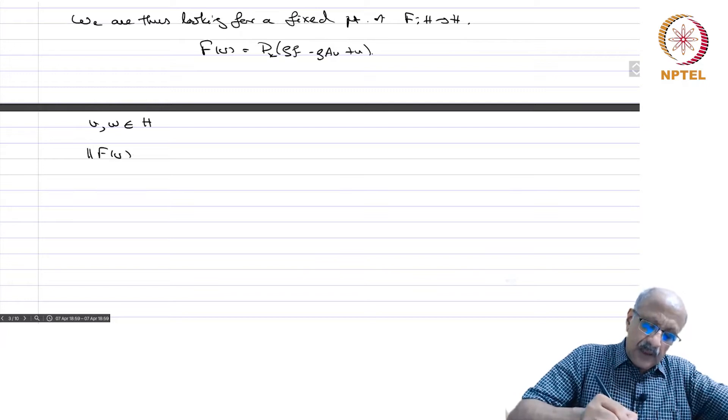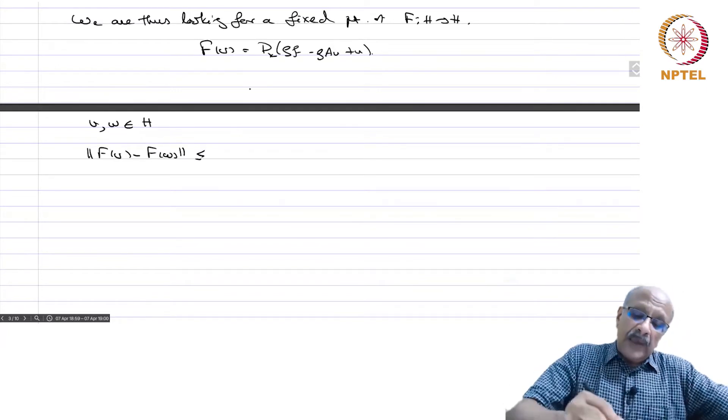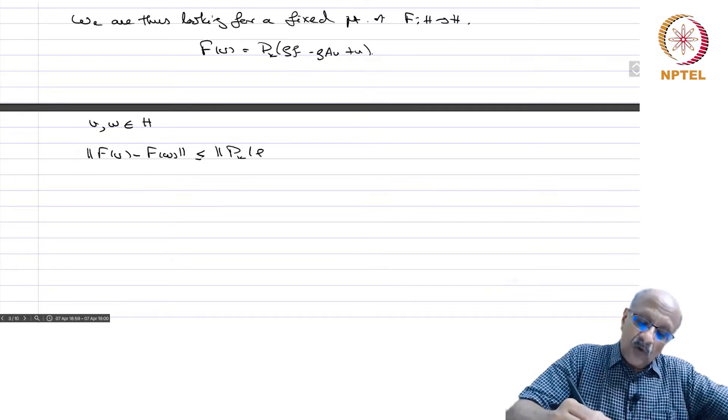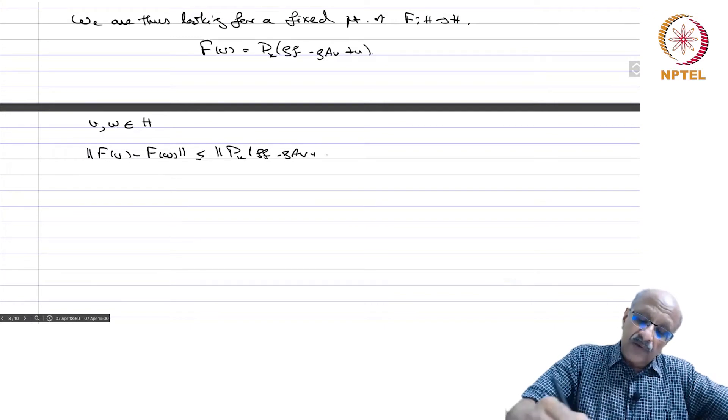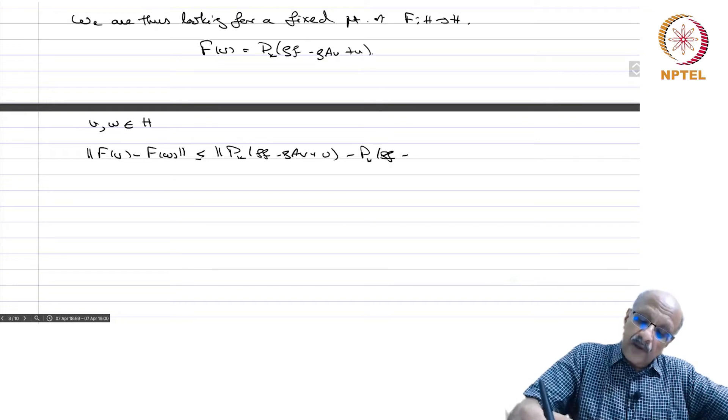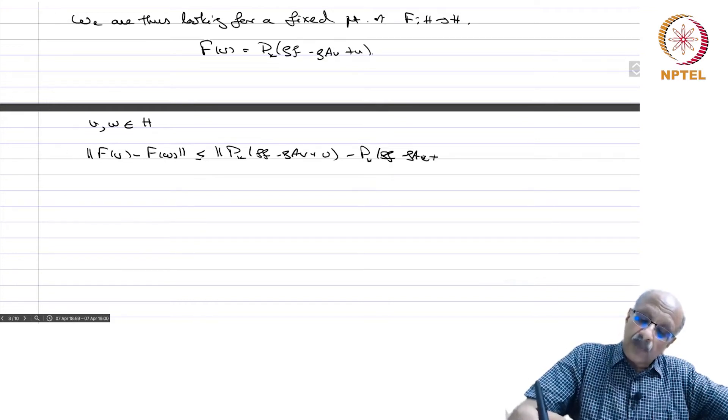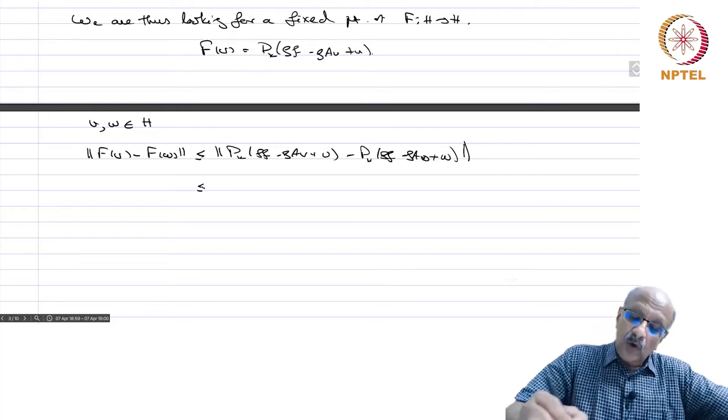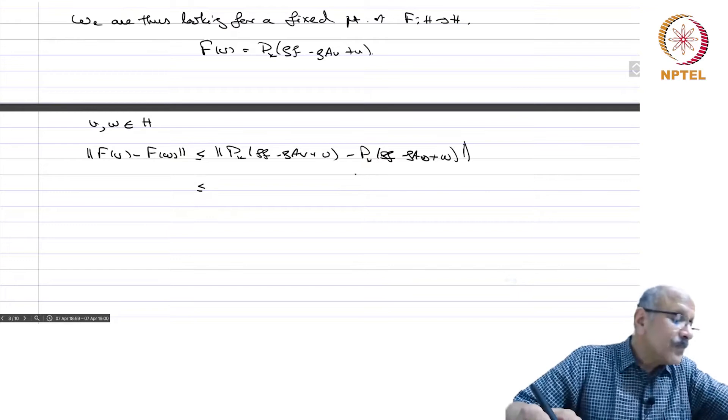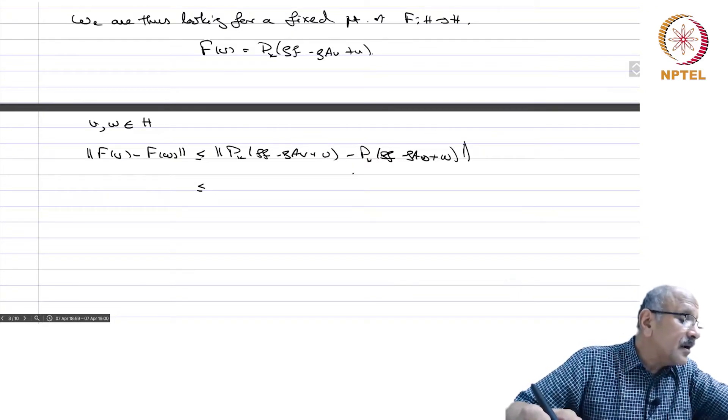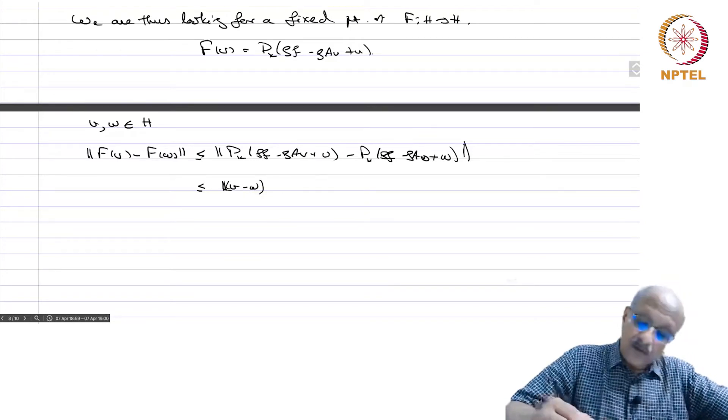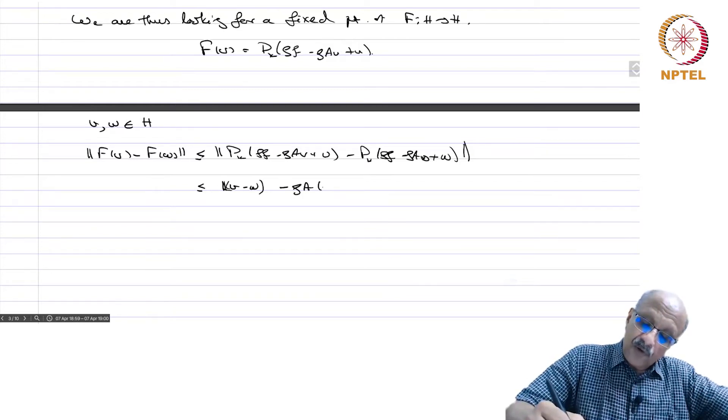The norm of F(V) - F(W) is the norm of PK(ρF - ρAv + V) - PK(ρF - ρAw + W). When we take the difference, you get that this term gets subtracted out, and therefore you will get that norm of v minus w minus ρA(v-w).